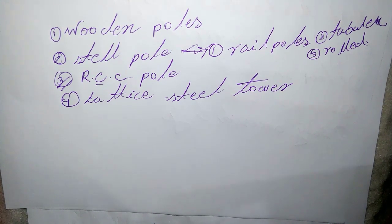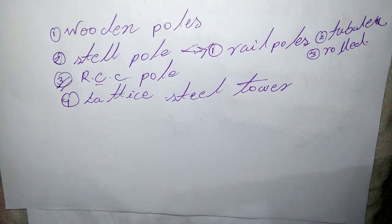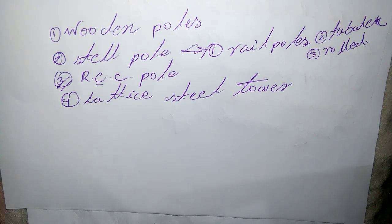Wooden, steel, and reinforced concrete poles are used for distribution purposes at low voltage, up to 11 kV. However, for long distance transmission, lattice steel towers are used.